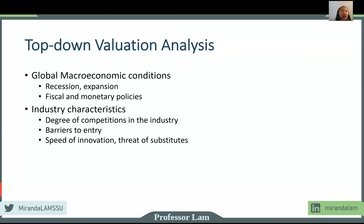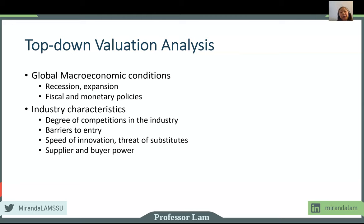In today's day and age, the speed of innovation — we talk about creative destruction — is definitely something to keep in mind. And then finally, what is the relative buying power of the firm in relation to its suppliers and its consumers? If there are very few firms in the industry, you will have more leverage. Also, if the size of the firm is big relative to its suppliers, you may also have some leverage. So all those are unique characteristics that we need to take into account.